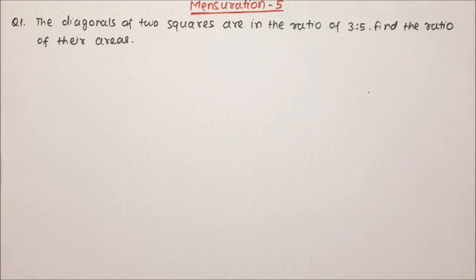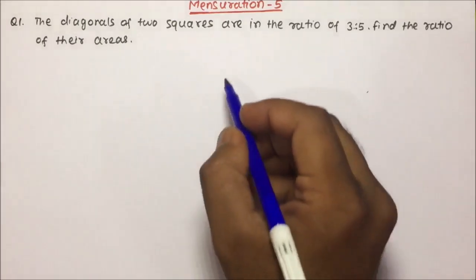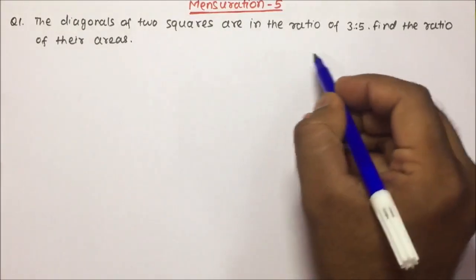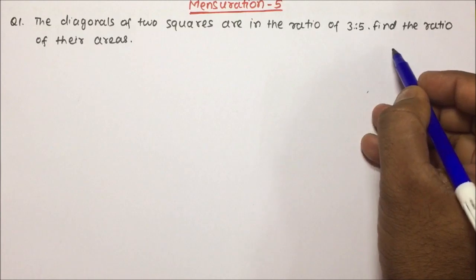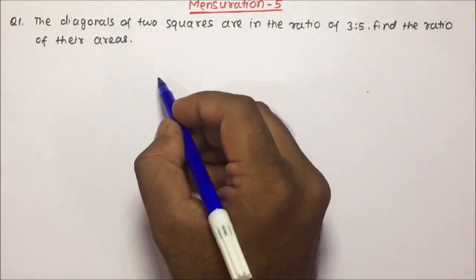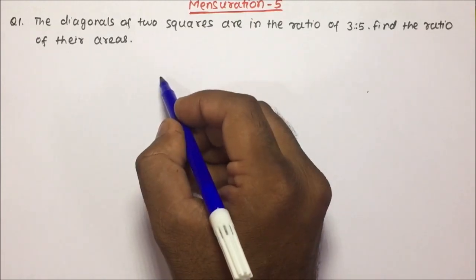Try to solve question number 1. The diagonals of 2 squares are in the ratio of 3 is to 5. Find the ratio of their areas.